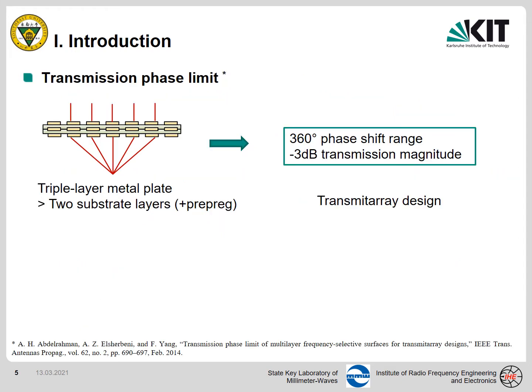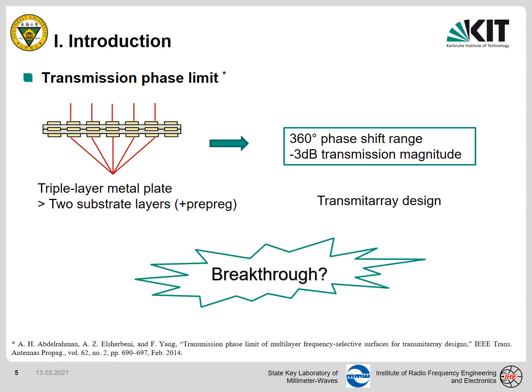One important work has been published in 2014. It discussed the transmission phase limit of the unit cell in transmitarray or metasurface lens design. One important conclusion is that we need at least three layers of metal plate to achieve the full phase shift range and half power transmission. For the PCB process, we need at least two substrate layers, and sometimes with prepared layers in between to combine these substrate layers. This multi-layer design is high cost. So is there any way to break through the phase limit?